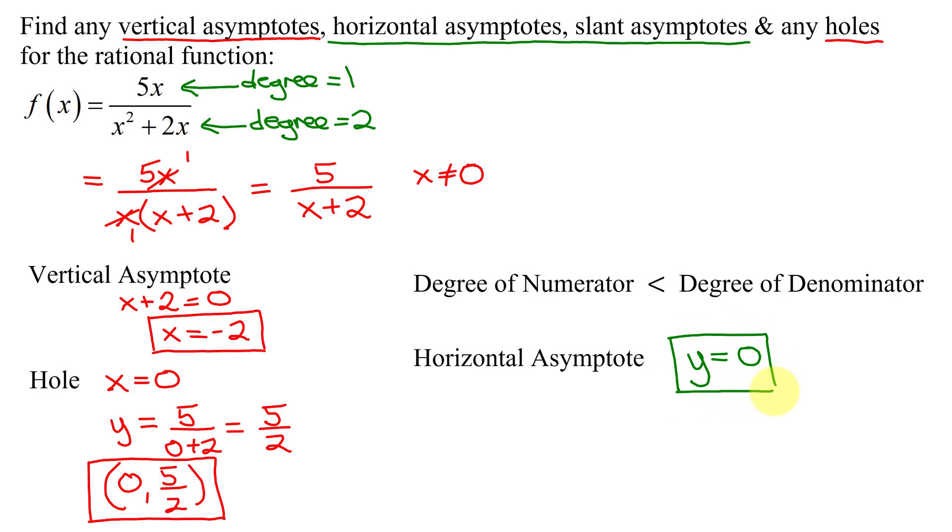Remember, the horizontal asymptote has to be an equation of a horizontal line, so it has to start with y equals a number. And lastly, looking at slant asymptotes, rational functions cannot have both a horizontal asymptote and a slant asymptote. So since this function has a horizontal asymptote, we know it has no slant asymptote.